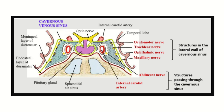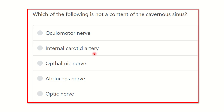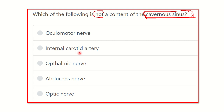Hello everyone, welcome to another session on proportion and association for emergency systems. The question is: which of the following is not a content of the cavernous sinus? It is a direct question about what is not a content of the cavernous sinus. The options are oculomotor nerve, internal carotid artery, ophthalmic nerve, abducent nerve, and optic nerve.